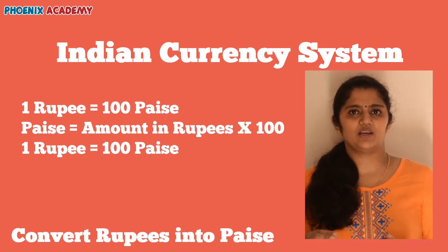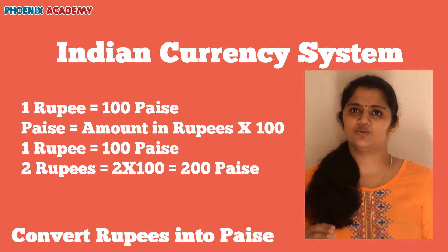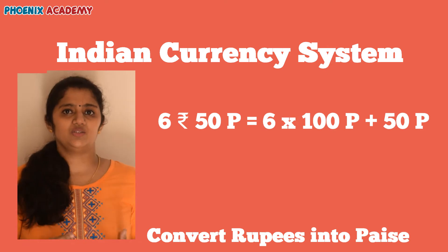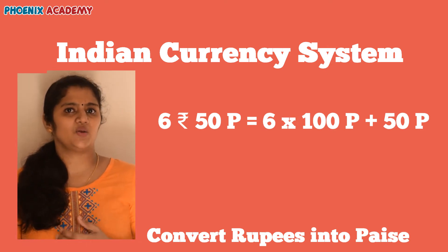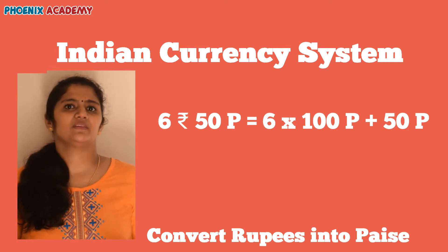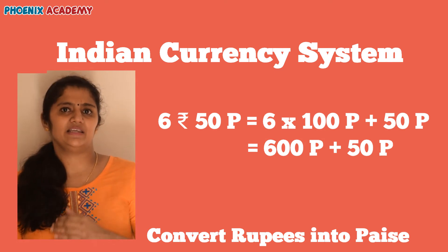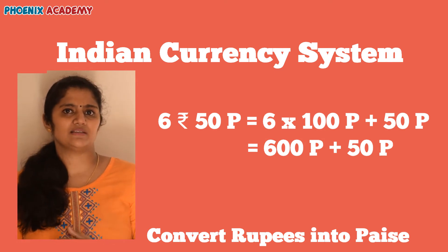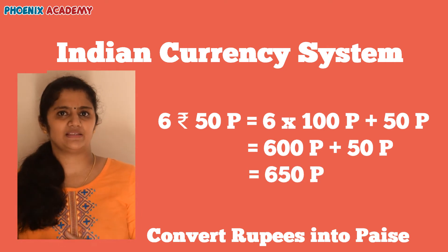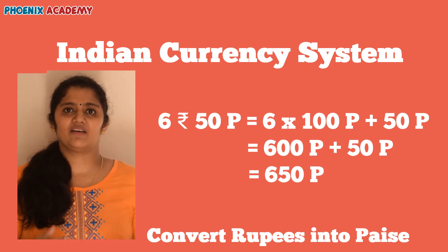Rupees 1 is equal to 100 paise. Rupees 2 is equal to 2 into 100, that is 200 paise. How to convert 6 rupees and 50 paise into paise? First convert 6 rupees into paise. 6 rupees is equal to 600 paise. And then add 50 paise to 600 paise. So 6 rupees 50 paise is equal to 650 paise.